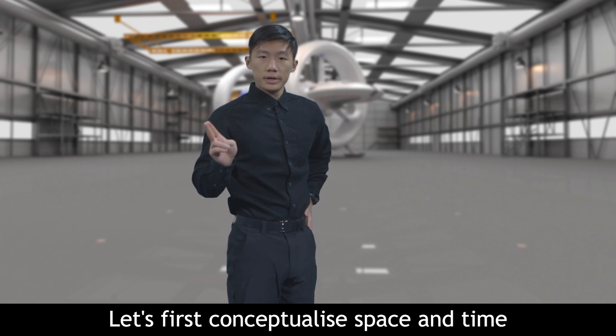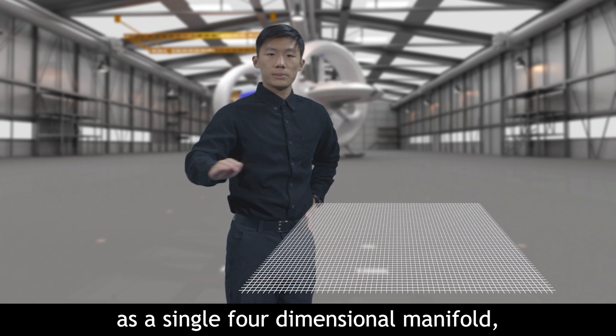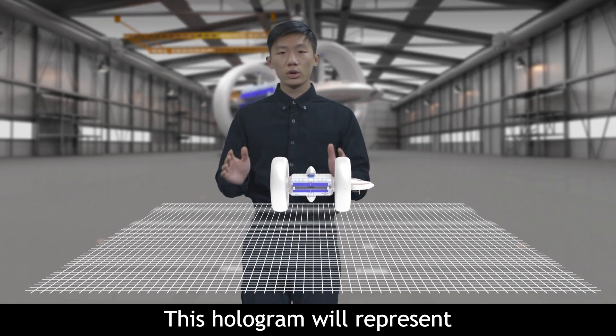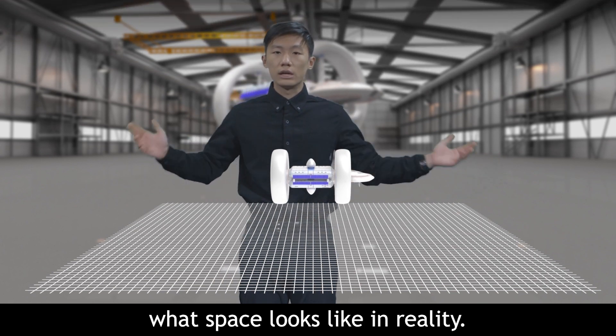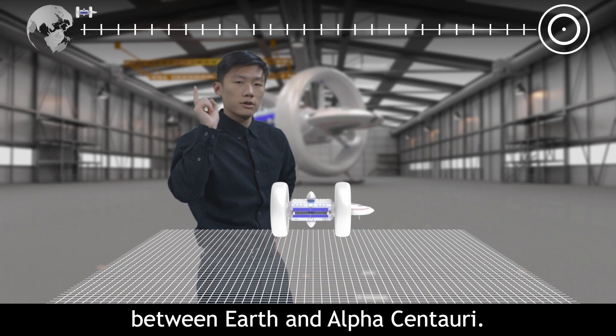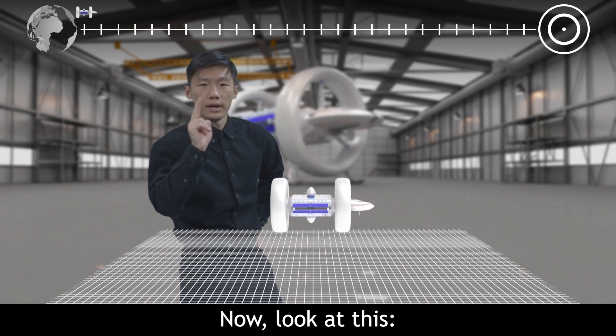Let's first conceptualize space and time as a single four-dimensional manifold, called the fabric of spacetime. This hologram will represent what space looks like in reality. Also, this diagram can display the distance between Earth and Alpha Centauri. Now, look at this.